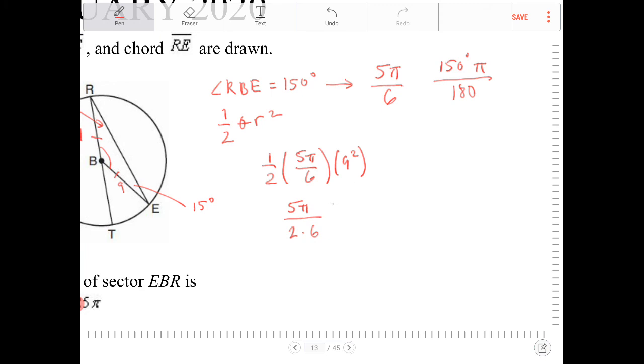9 squared is the same thing as 9 times 9, or it's really 3 to the 4th. So this is equivalent to 27. 5 pi times 27, 5 pi times 27, over 4. Or really, this is 135 pi over 4.